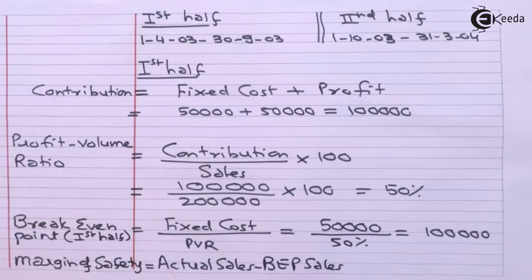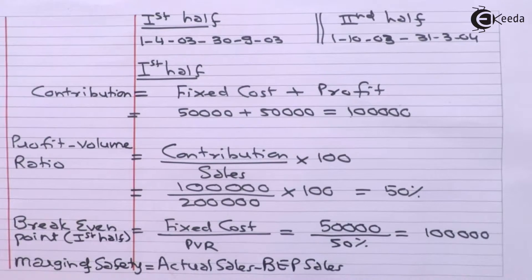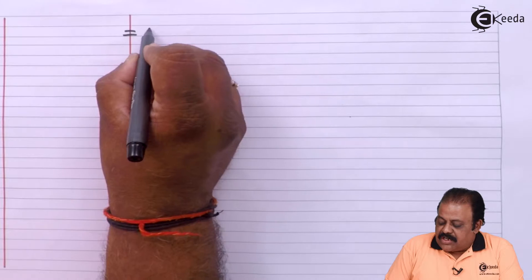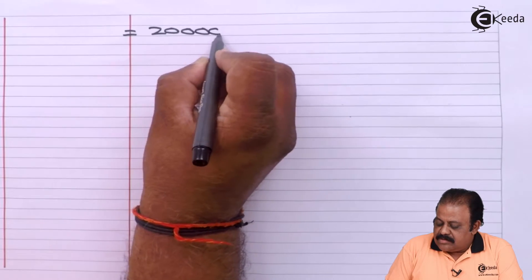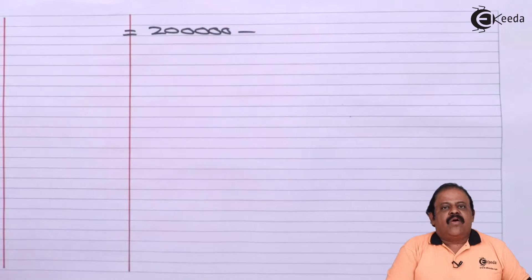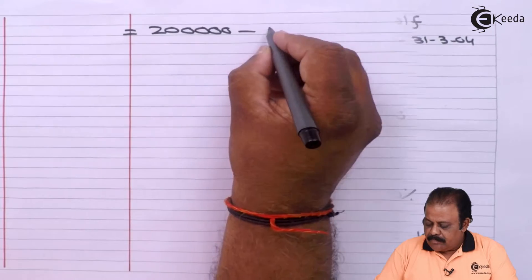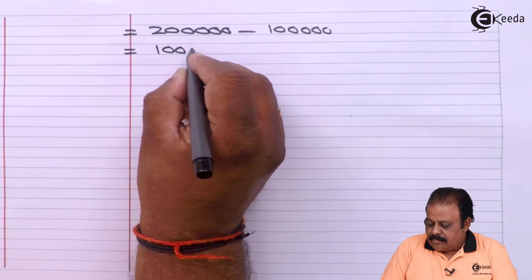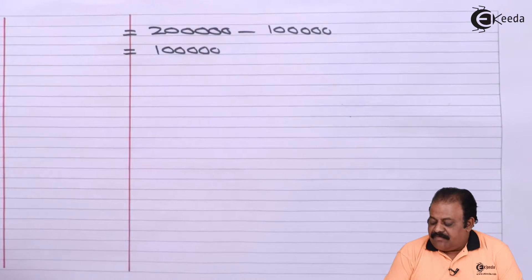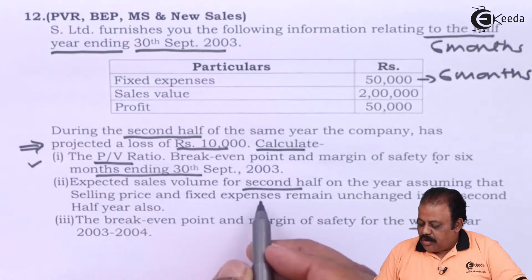Margin of safety for the first half uses the formula: actual sales minus break-even point sales. Actual sales given in the question are two lakhs, minus break-even point sales of rupees one lakh. So margin of safety for the first half is rupees one lakh.